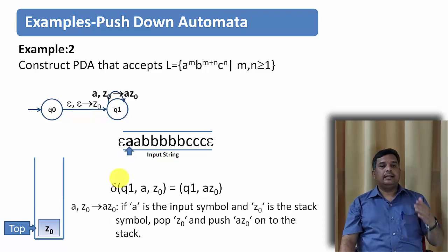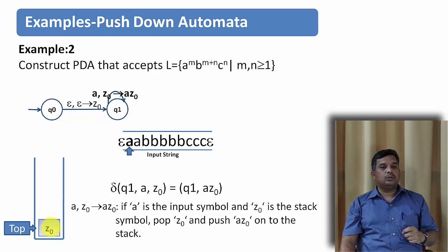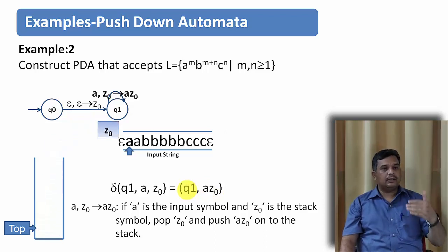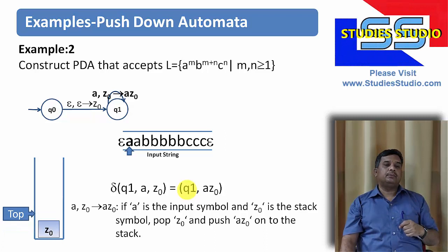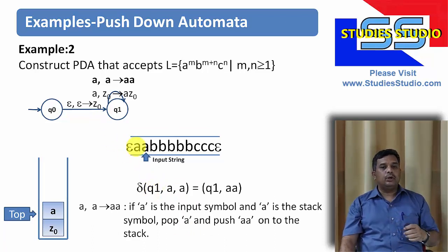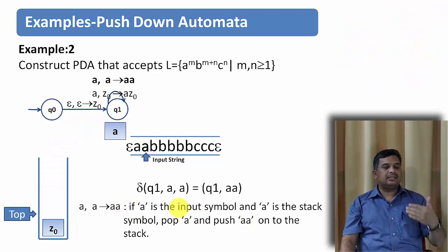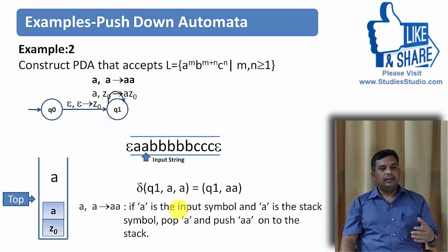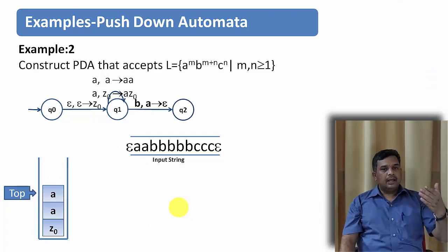The next input is a, and z0 is on top of the stack, so we push a z0: transition delta(q1, a, z0) = (q1, a z0) — we pop z0, push z0 back, then push a onto the stack. The next input is again a, and a is on top of the stack, so we pop a, push it back, and push the new input a. Now we have input symbol b: a is on top of the stack and b is the input, so we pop a.